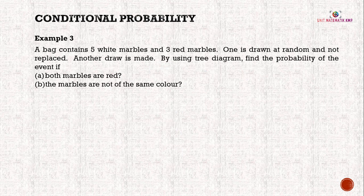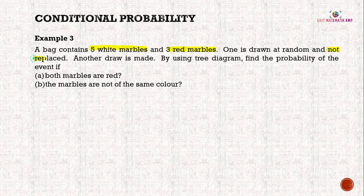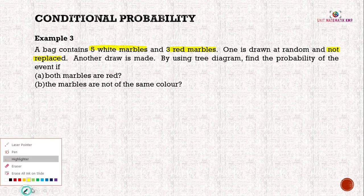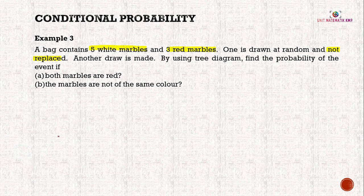Example 3: A bag contains 5 white marbles and 3 red marbles. One is drawn at random and not replaced, then another draw is made. Using a tree diagram, find the probability that both marbles are red, and that the marbles are not the same colour. Let W = event white marble is drawn, and R = event red marble is drawn.